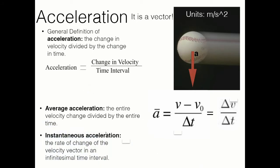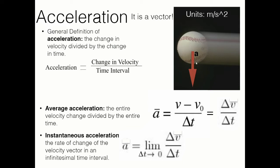Instantaneously, we're looking at acceleration at a certain instant in time — it's the rate of change of velocity in an infinitesimal time interval, just like we did for instantaneous velocity. Instantaneous acceleration is defined the same way: take the expression for average acceleration and take the limit as delta t approaches zero. So we're looking at a specific instant in time, just like when we look at a visual acceleration vector — that's an instantaneous acceleration value at the particular instant the picture was taken.